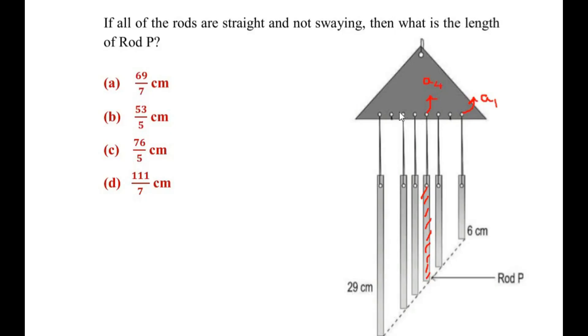Then this is A5, this is A6, this is A7, and let us take the 29 cm rod as A8.